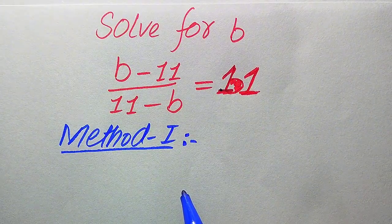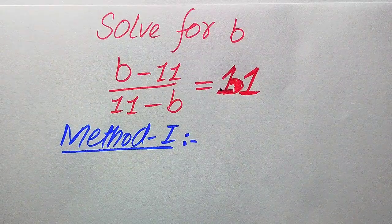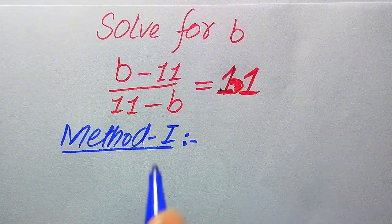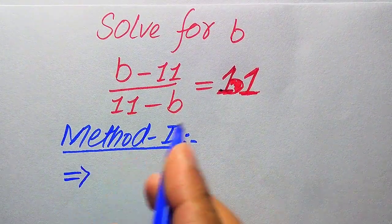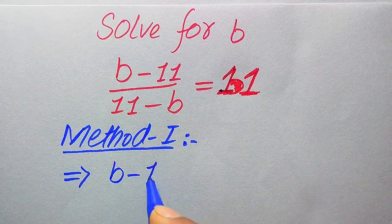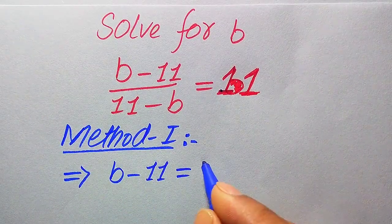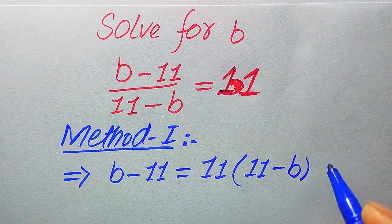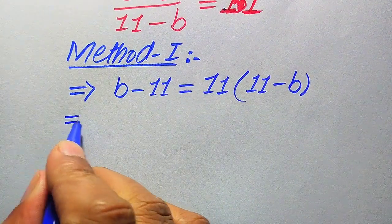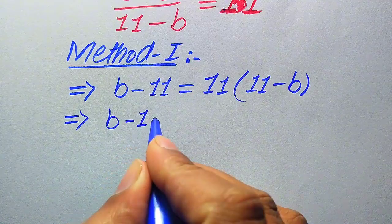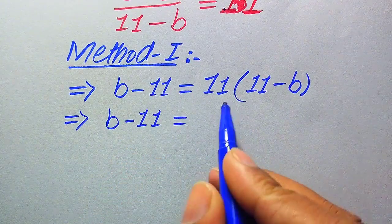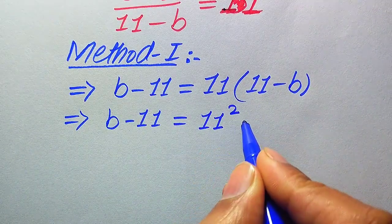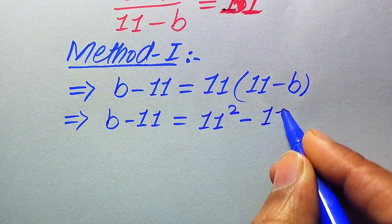Now we move toward the solution using the first method. We move (11 minus b) from the left-hand side to the right-hand side — when we move it, it becomes a multiplier — so it is written as: b minus 11 equals 11 multiplied by (11 minus b). We then distribute: b minus 11 equals 11 squared minus 11b.